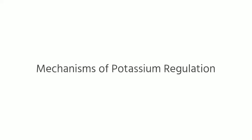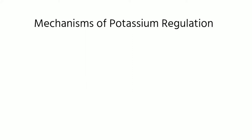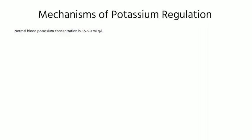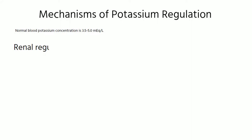This video reviews mechanisms of potassium regulation. The extracellular fluid concentration of potassium is regulated at about 4.2 mEq per liter, and normal blood potassium concentration is 3.5 to 5 mEq per liter. Plasma potassium is largely regulated through renal mechanisms that conserve or eliminate potassium and a transcellular shift between the extracellular fluid and the intracellular fluid compartments.